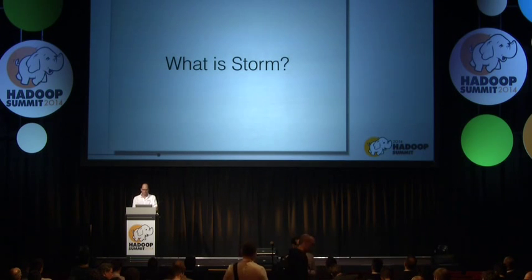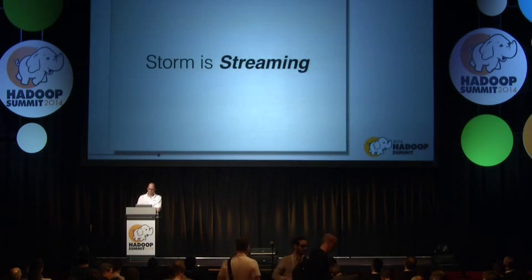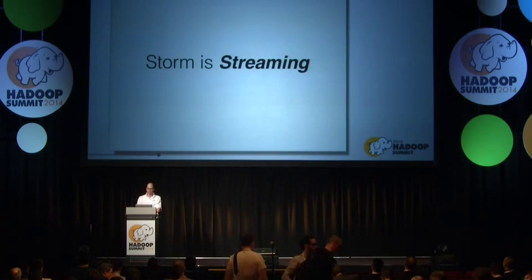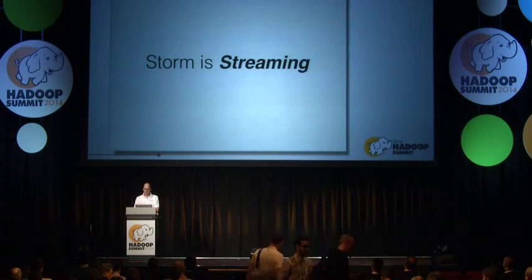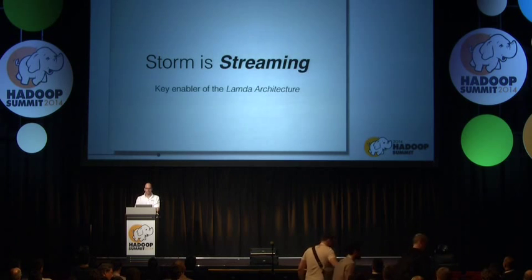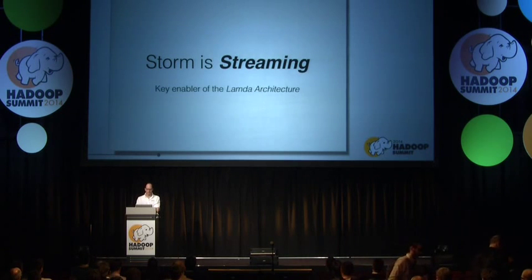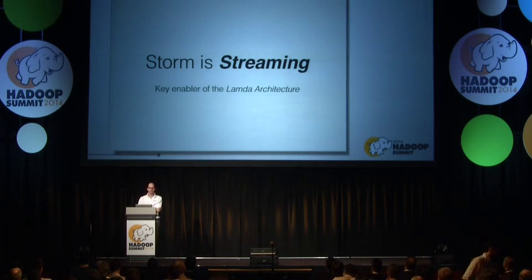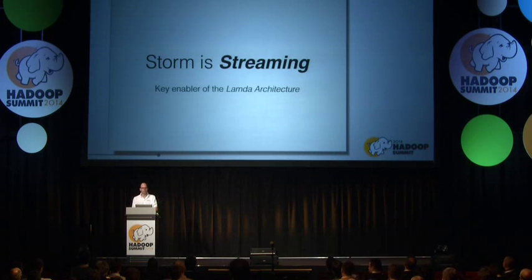So what is Storm? Storm is streaming. Storm is a key enabler of the Lambda architecture. In the Lambda architecture, Storm represents the speed layer, while Hadoop represents the batch layer.